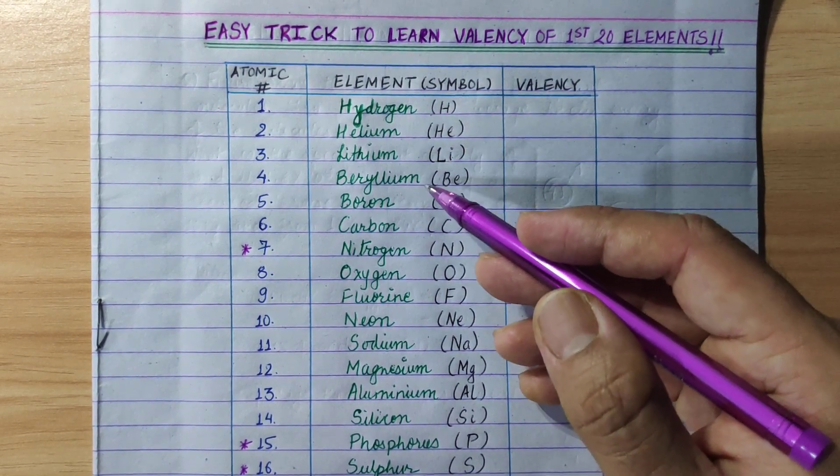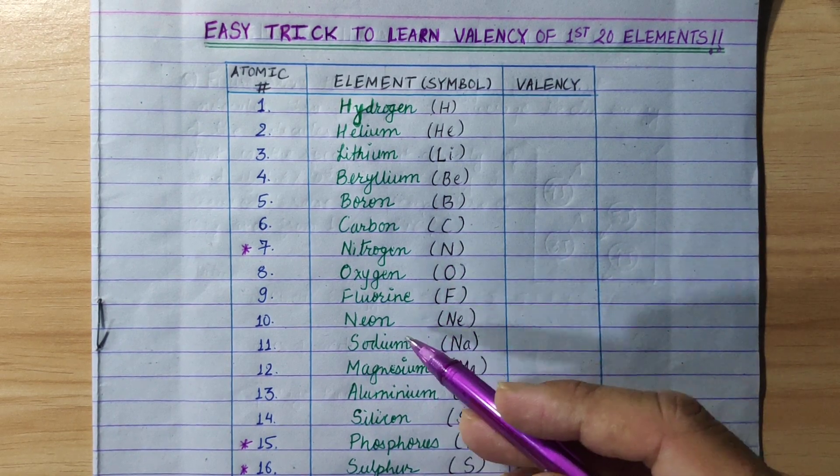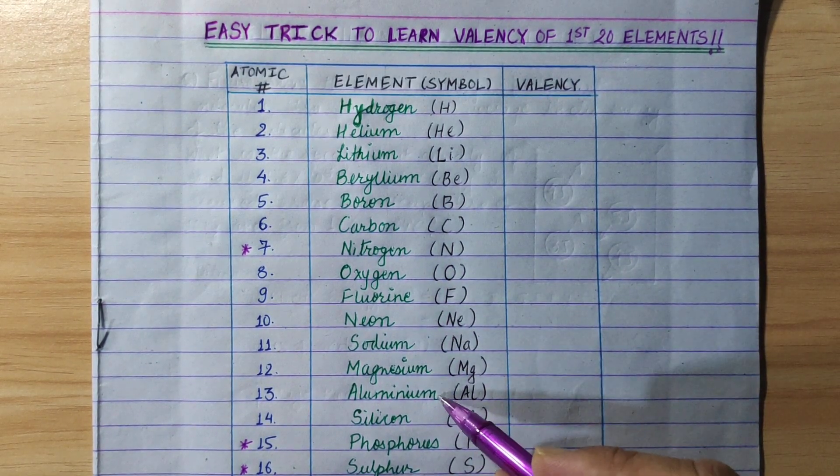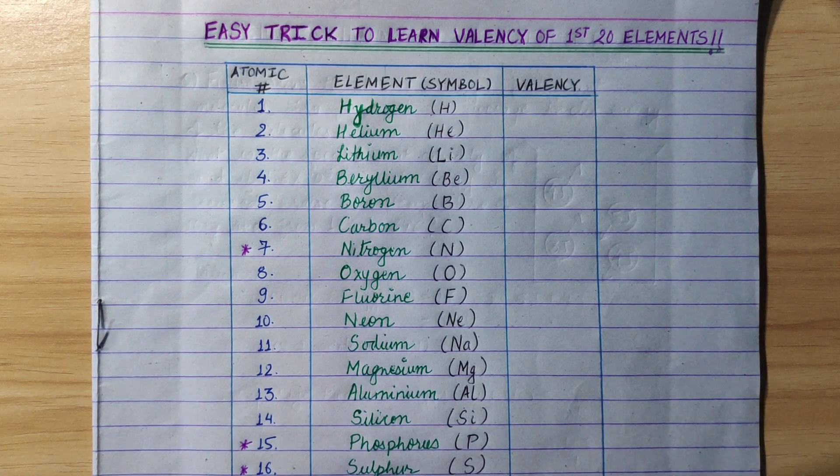Hydrogen, helium, lithium, beryllium, boron, carbon, nitrogen, oxygen, fluorine, neon, sodium, magnesium, aluminum, silicon, phosphorus, sulfur, chlorine, argon, potassium, calcium.